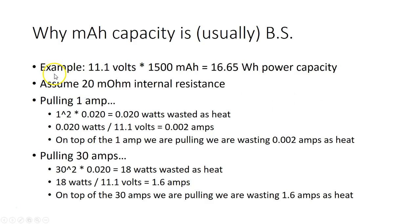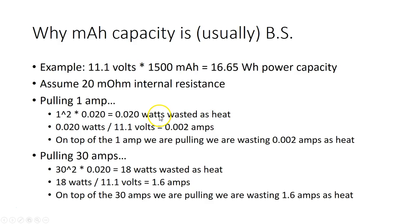So if we take an example where we have an 11.1 volt 3S battery, 1500 milliamp hour rated capacity — that gives us 16.65 watt hours of power capacity — and if we assume a 20 milliohm internal resistance, then say we're pulling one amp from the battery. We run that back through that formula and we get 0.020 watts wasted as heat. If we convert those watts back to amps by dividing by the voltage, we get 0.002 amps. So for every one amp we're pulling, we're wasting the equivalent of 0.002 amps as heat.